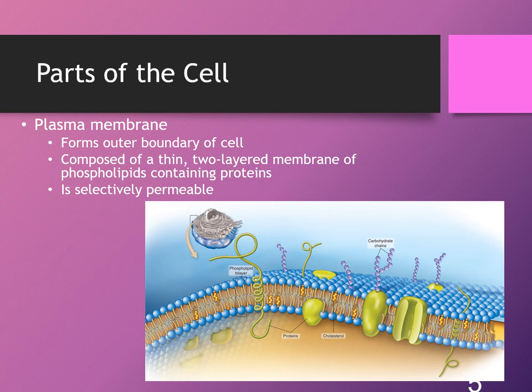Despite the fact that the plasma membrane is 3/10 millionths of an inch thick, it's strong enough to keep the cell whole and intact, and it also performs other life-preserving functions. One of the things the cell membrane does is serve as a boundary or gateway between the fluid inside the cell and the fluid around it.